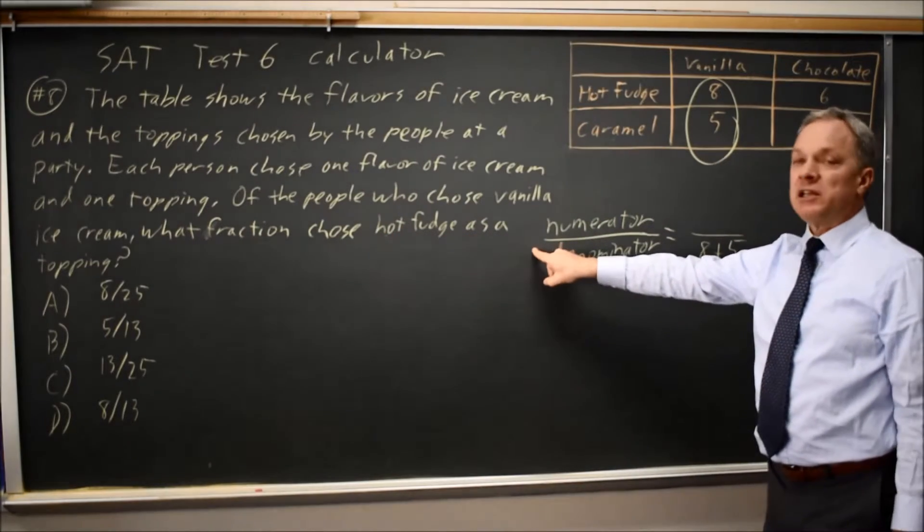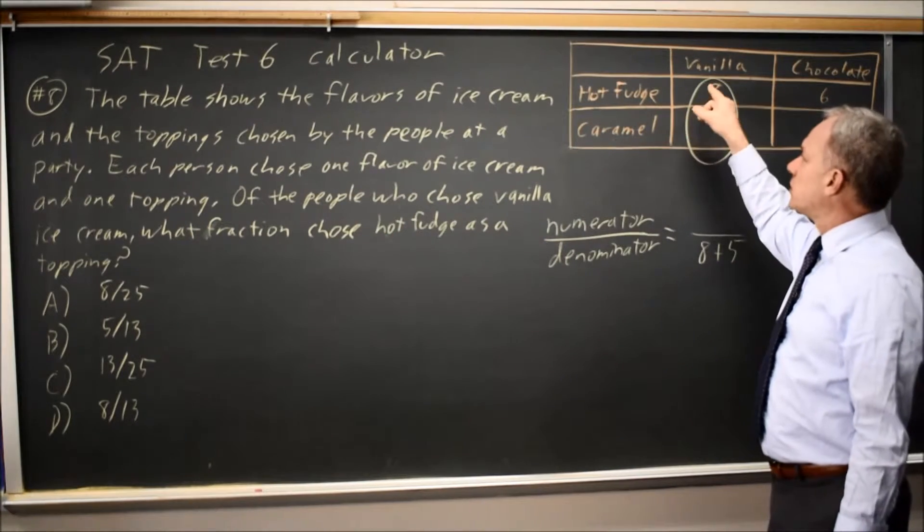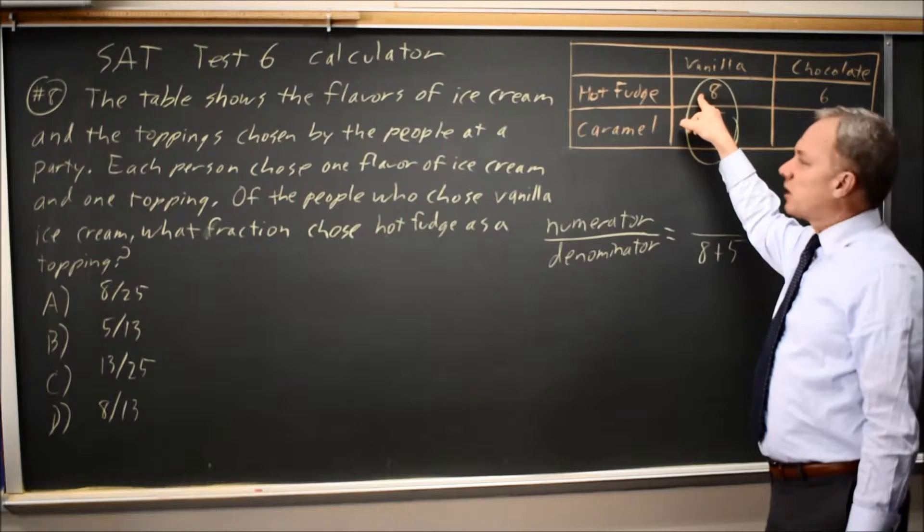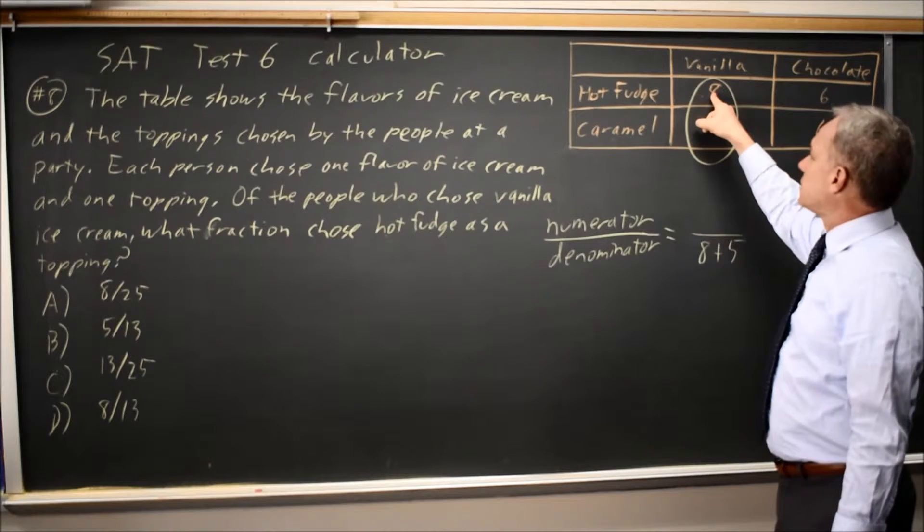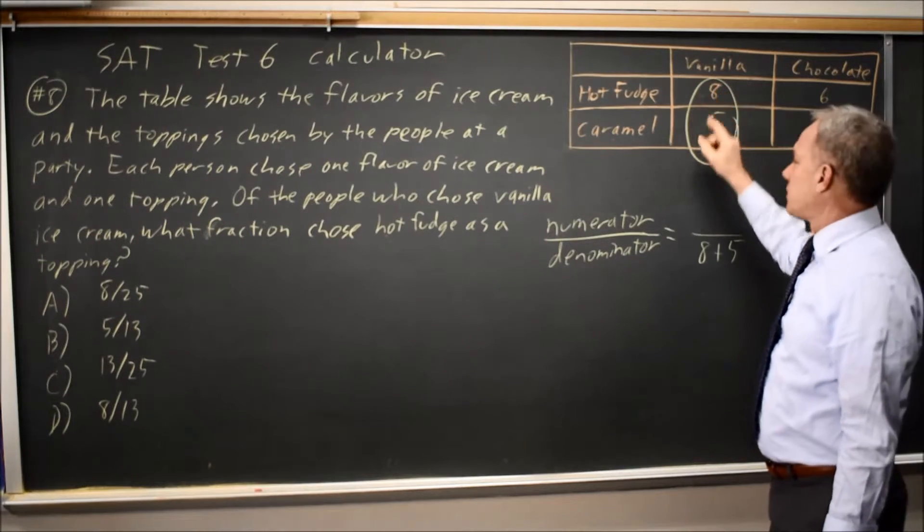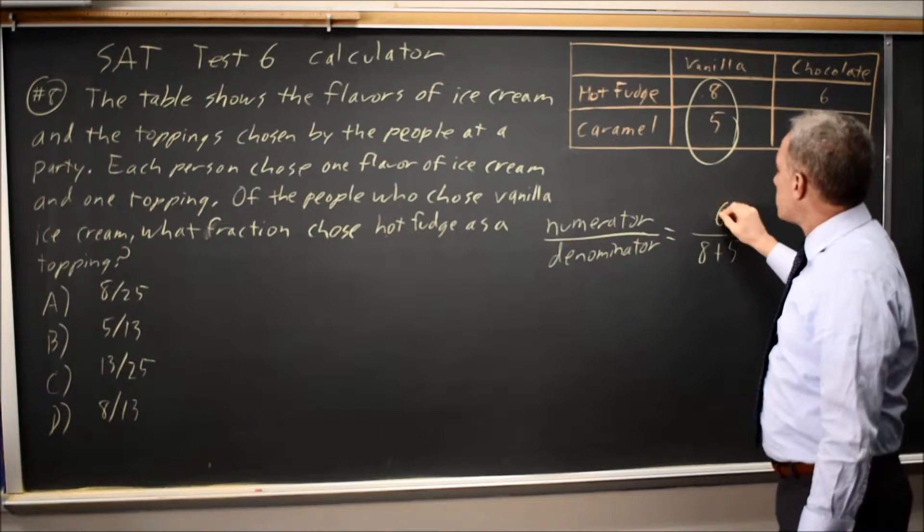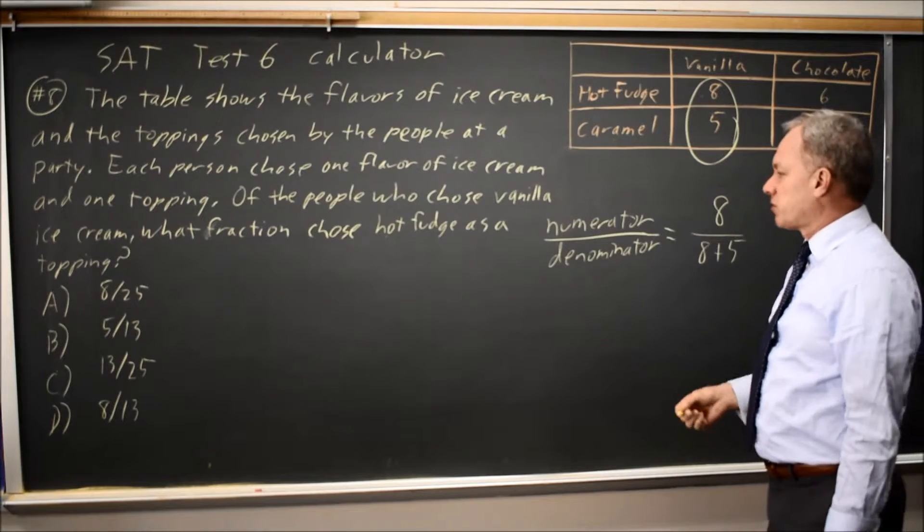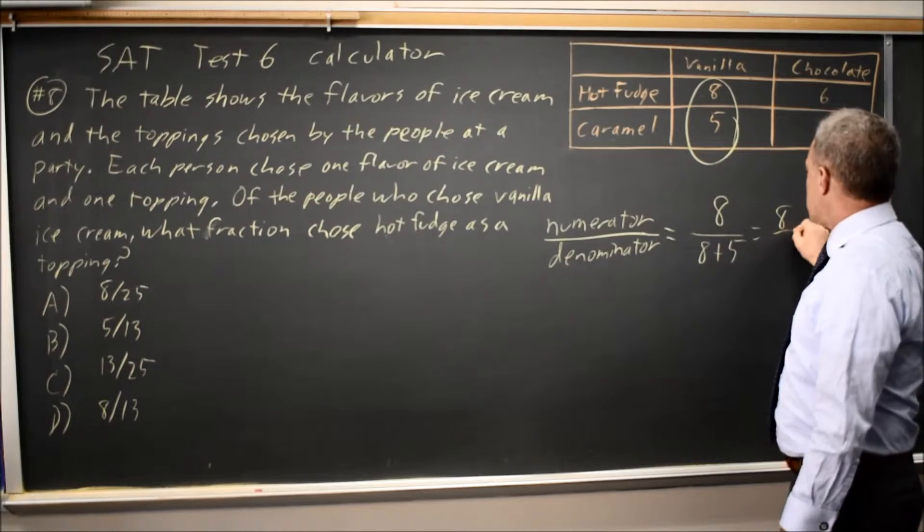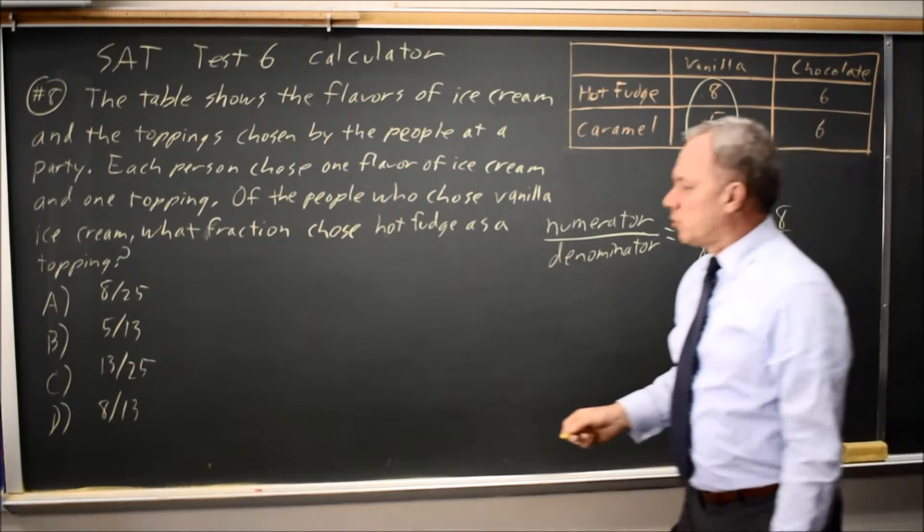So our numerator is those who chose hot fudge from those in the denominator. So it's not all the hot fudge, it's just hot fudge from those who chose vanilla. So our numerator would be 8, denominator is 8 plus 5, that is 8 over 13, which is choice D.